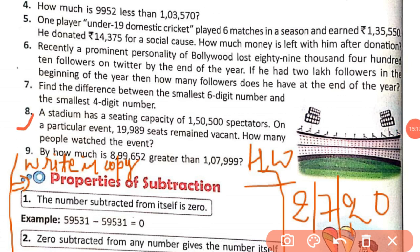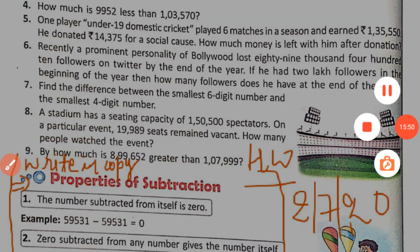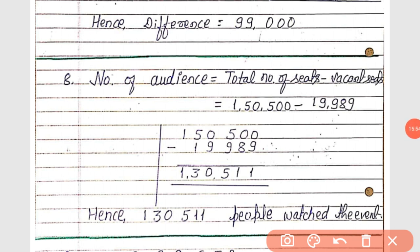Question number 8: a stadium has a seating capacity of 1,50,500 spectators. On a particular event, 19,989 seats remain vacant. How many people watched the event? To find the number of audience: total number of seats minus number of vacant seats. Total seats: 1,50,500 minus vacant seats: 19,989. After subtracting, we get a difference of 1,30,511. Hence, 1,30,511 people watched the event.